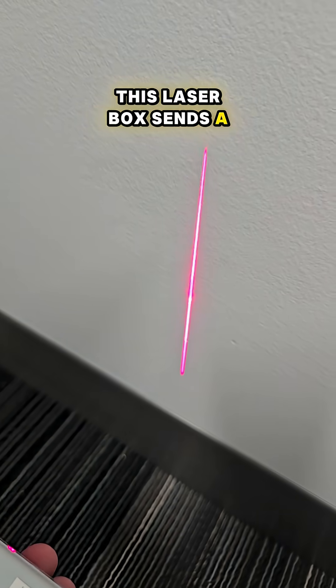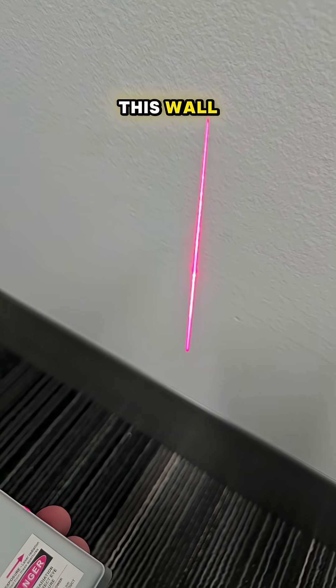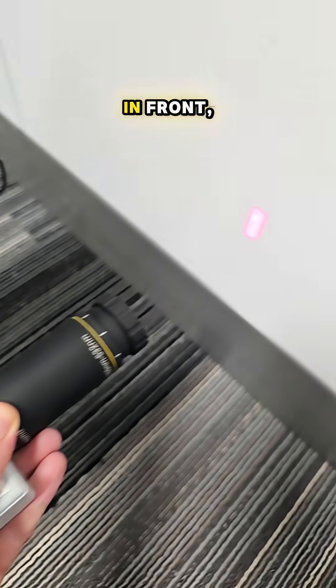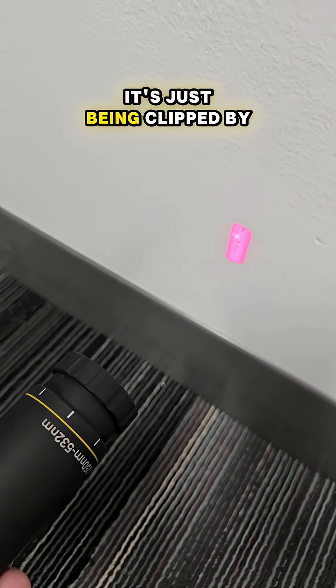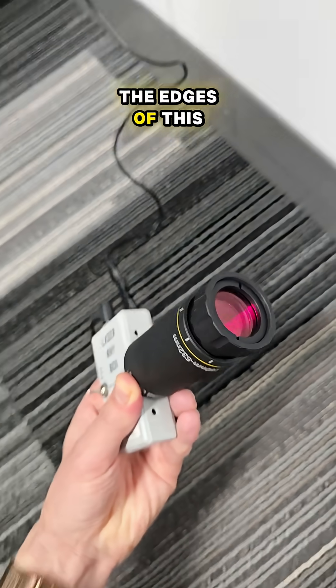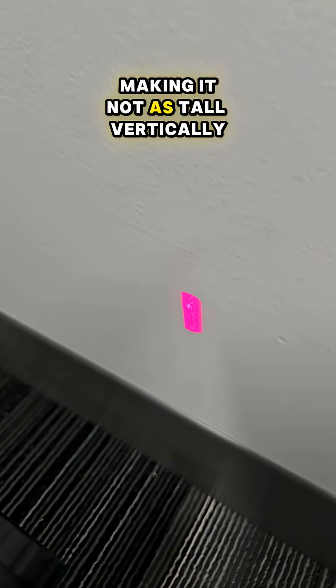This laser box sends a thin line of light onto this wall, but with this beam expander in front, that line becomes much wider. It's just being clipped by the edges of this, making it not as tall vertically.